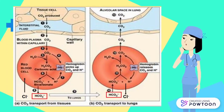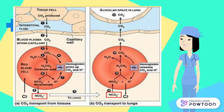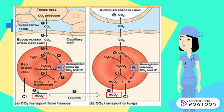In respiring tissue, CO₂ from tissue diffuses into plasma and enters the erythrocyte. CO₂ will combine with H₂O to form carbonic acid, H₂CO₃, catalyzed by carbonic anhydrase. Then H₂CO₃ will dissociate into hydrogen ion and bicarbonate ion.